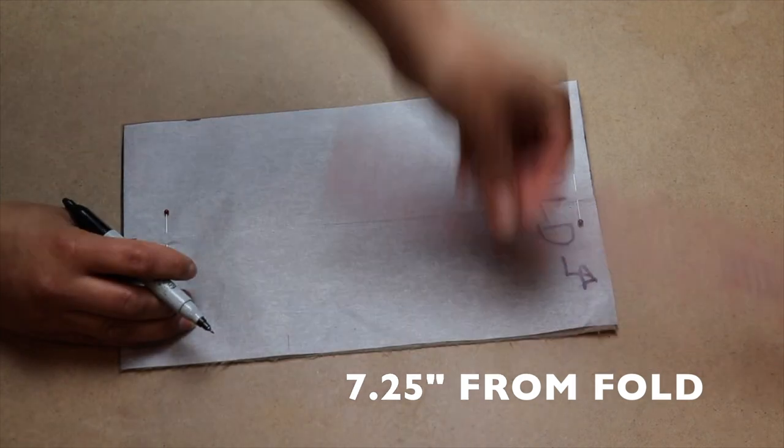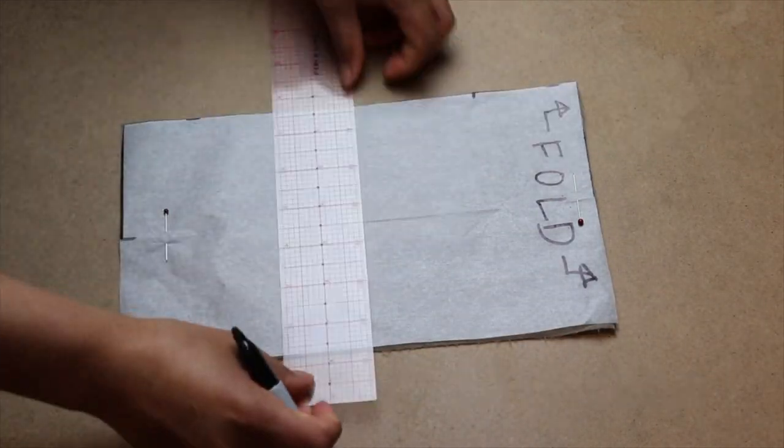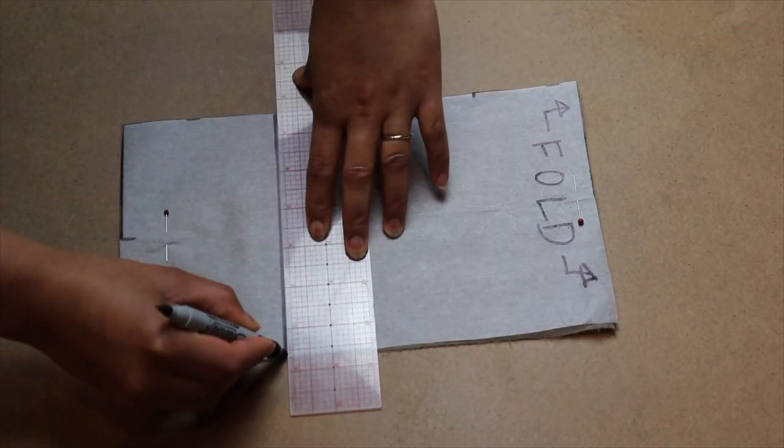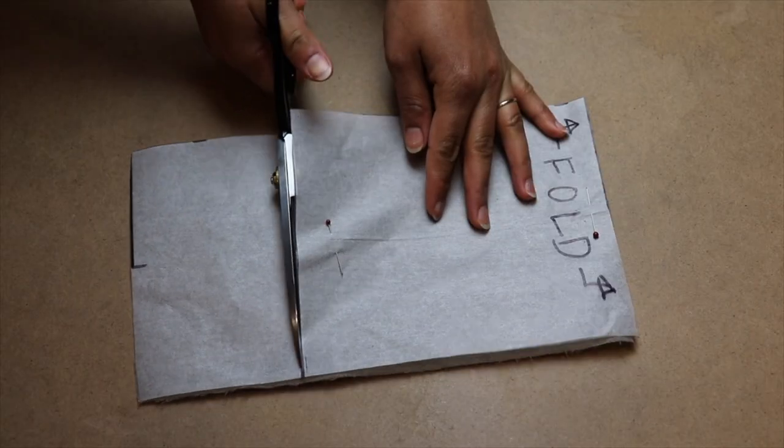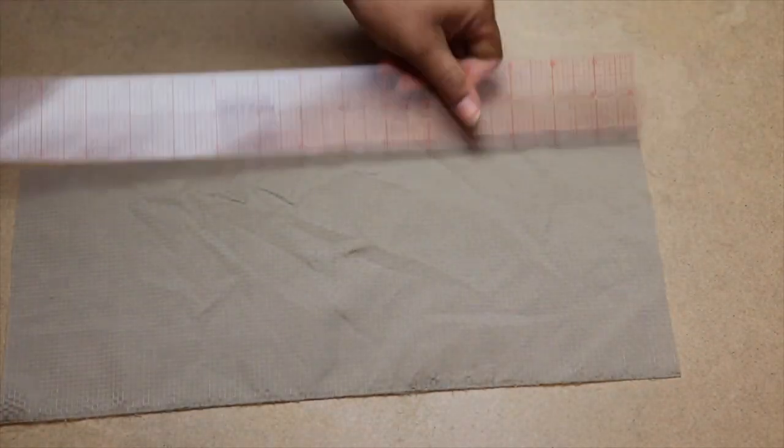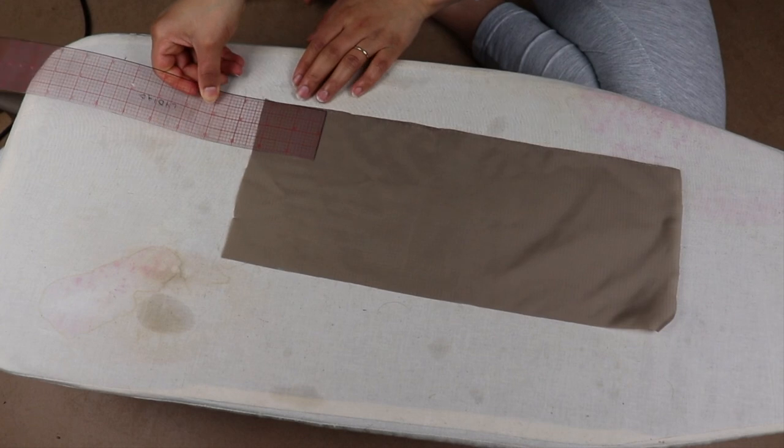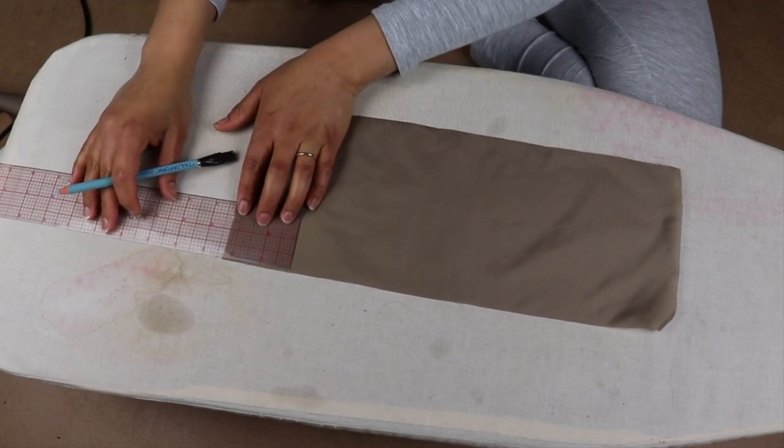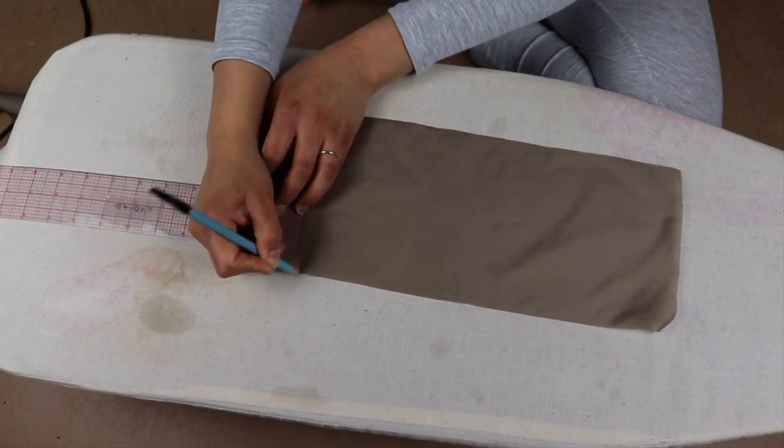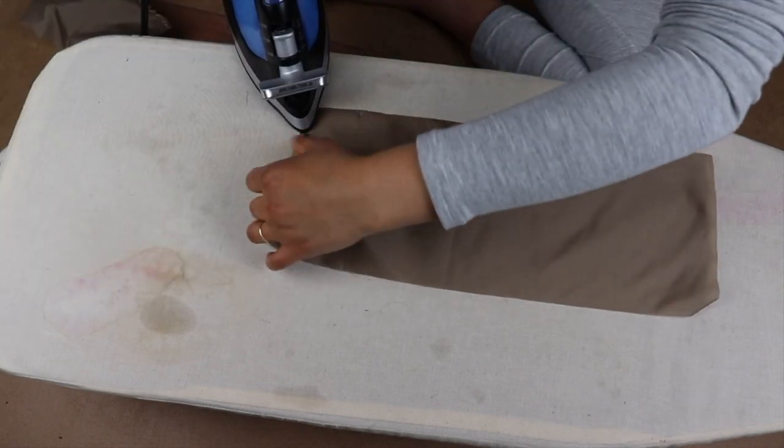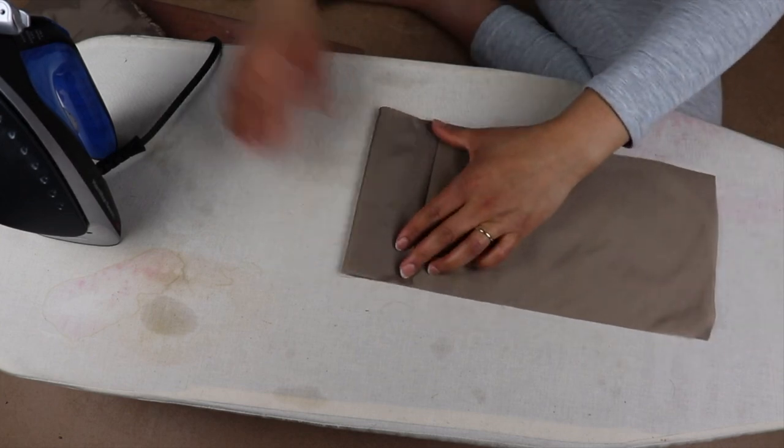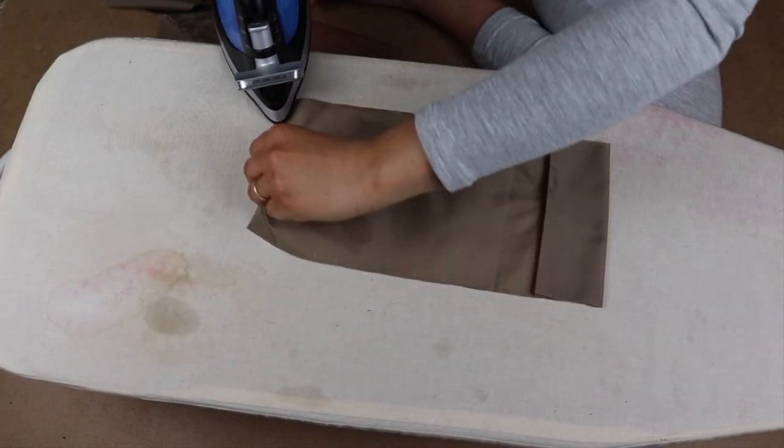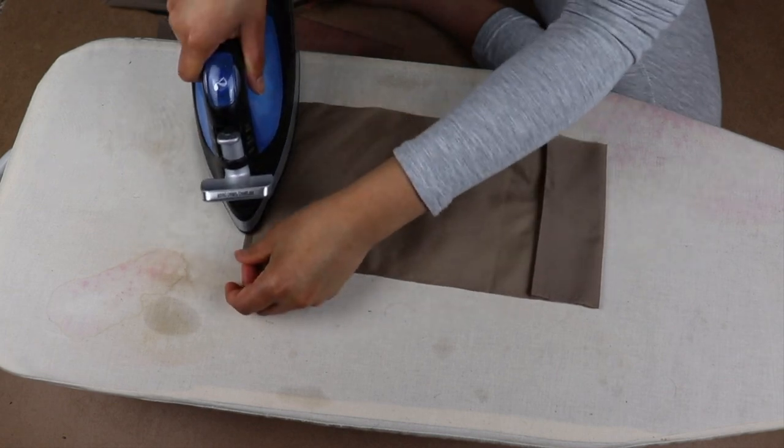From the fold of the packing pouch piece, measure down seven and a quarter inches, then cut. The pouch open should be six by fourteen point five inches. Measure two and a quarter inches from one end, fold over a quarter then two inches. Fold the opposite side quarter and a quarter and sew along either edge.